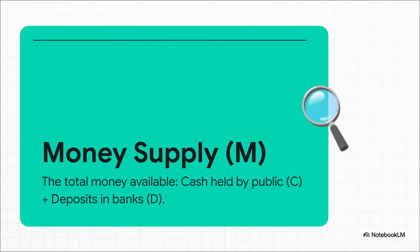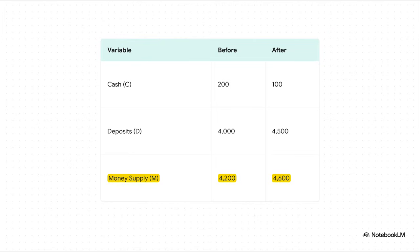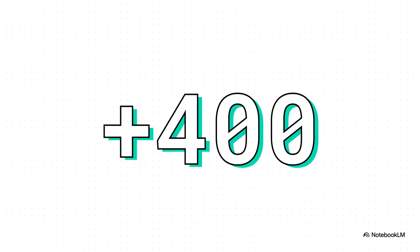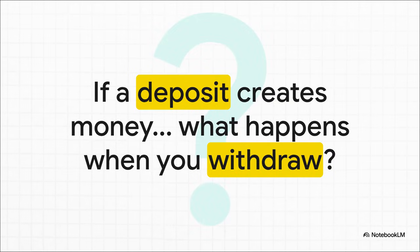To see the final impact, we need the money supply — all the cash people have plus all their bank account balances. Before the deposit, it was 200 in cash plus 4,000 in deposits, totaling 4,200. After the deposit and all the new lending it enabled, we have 100 in cash plus 4,500 in deposits — a new money supply of 4,600. The economy literally grew by 400 units, all because of one deposit of 100. That is the money multiplier effect: money was created through lending.